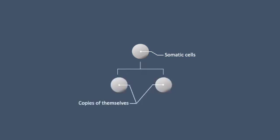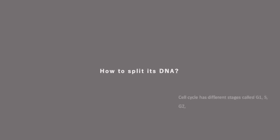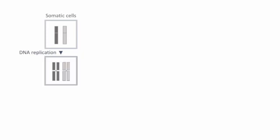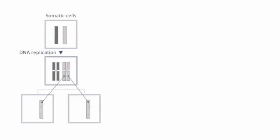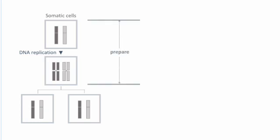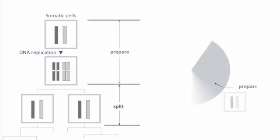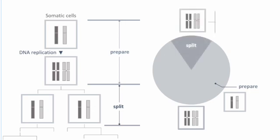Cells make copies of themselves to grow and repair themselves. How to split its DNA? A cell duplicates each chromosome and splits, prepare and split, prepare and split. This is called cell cycle.